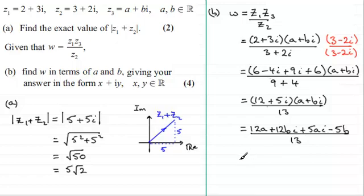So grouping up the real parts now 12a minus 5b, and if we divide this real part by 13 then we've got one part of our complex number, the real part here x.